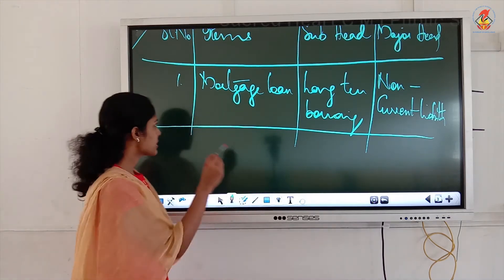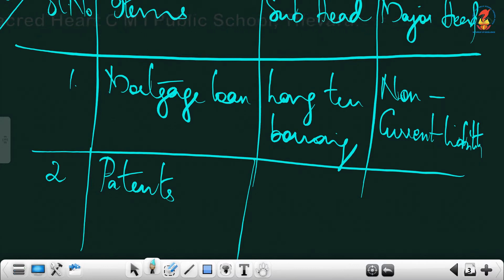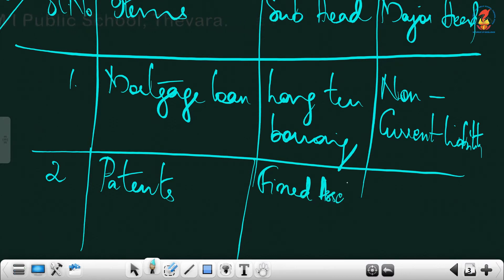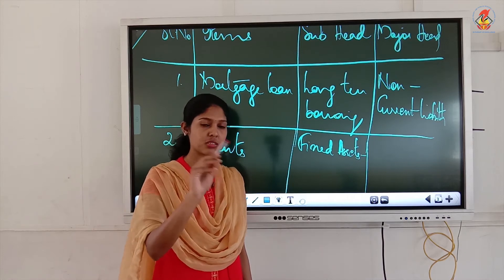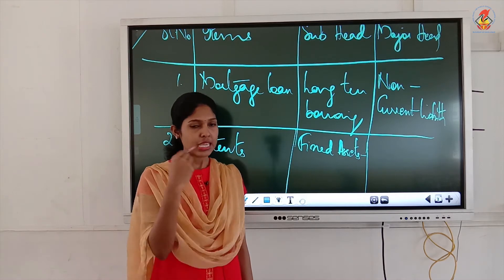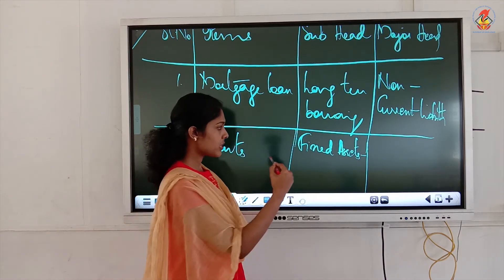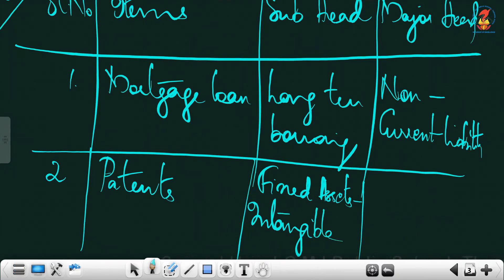Second one: patents. Patents are intangible assets, so you write the subhead as fixed assets – intangible. Fixed assets is not the major head; the major head is non-current assets, which is divided into fixed assets, which is further divided into tangible, intangible, capital work in progress, and intangible assets under development. So the subhead is fixed assets – intangible, and the major head is non-current assets.